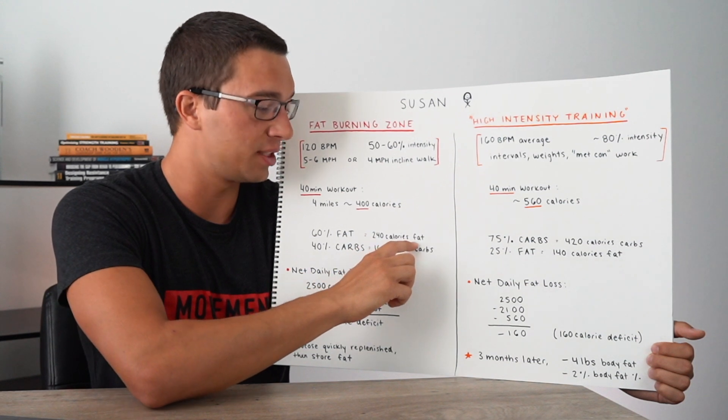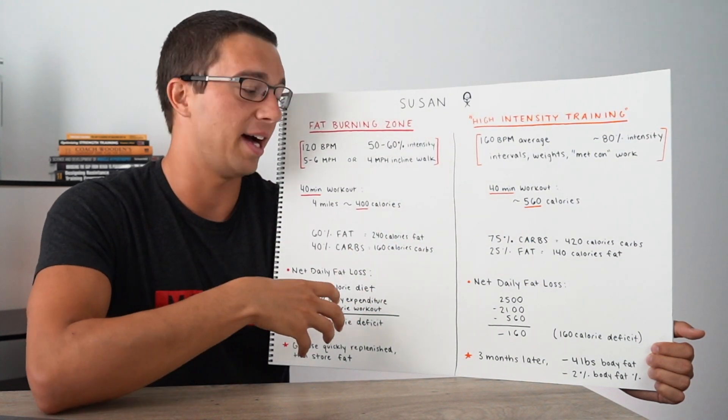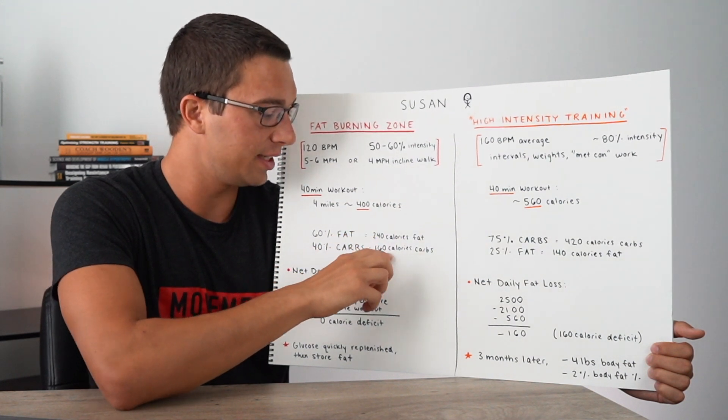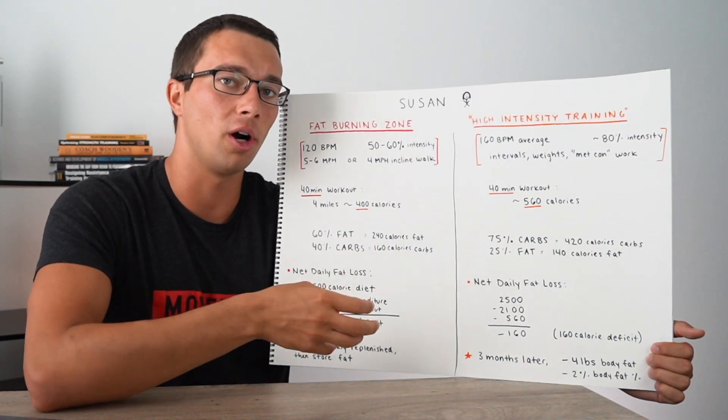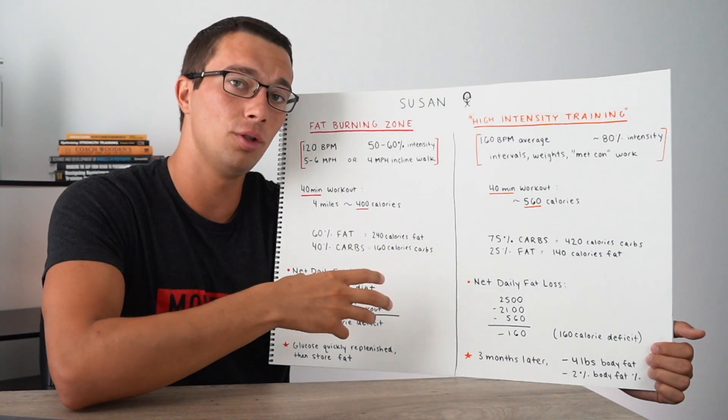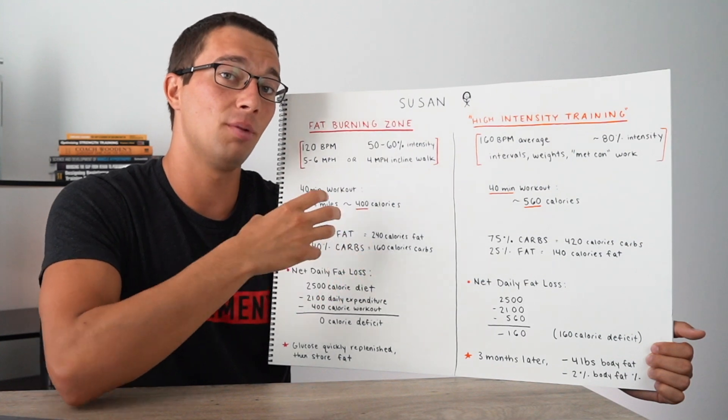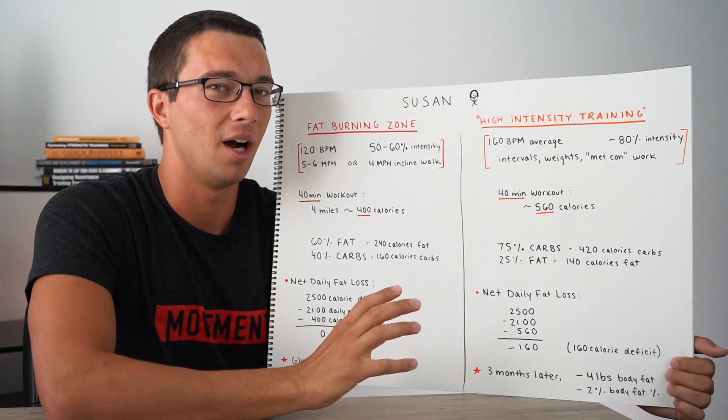about 240 calories were from her body fat. So she provided those calories from fat versus 160 calories that she provided from carbs. And that carb could be coming from blood glucose or glycogen stores, but this is about where the calories came from to be able to do that workout.